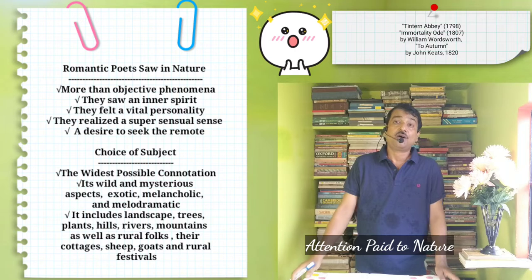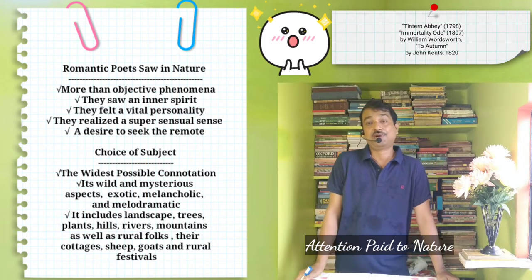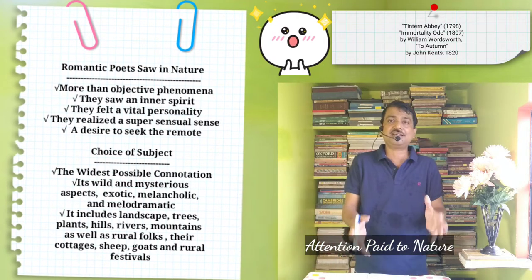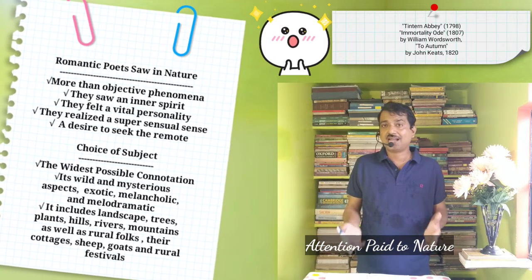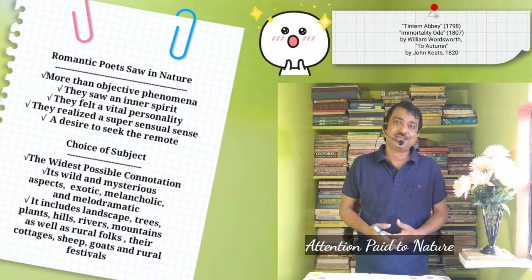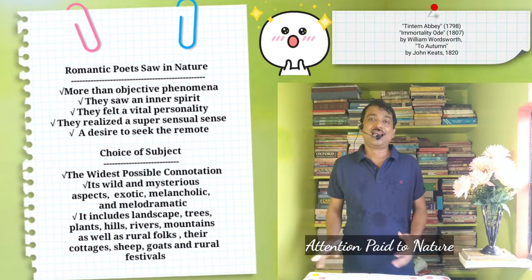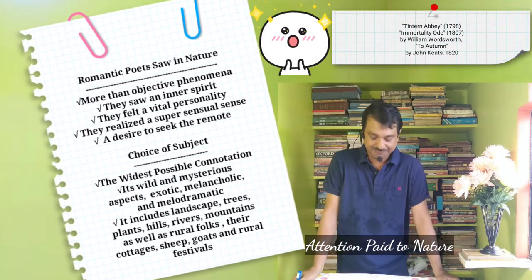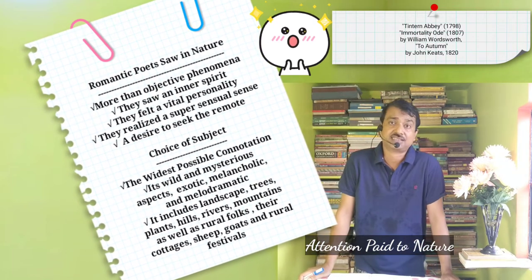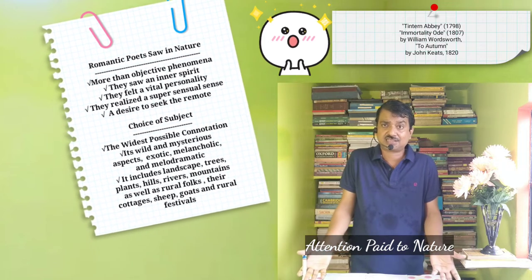Nature for the Romantic poets includes landscape, trees, plants, hills, rivers, and mountains, as well as rural folks together with their cottages, ships, goats, and rural festivals. Keats visualizes nature, Shelley intellectualizes it, Wordsworth mystifies it, and Byron revolutionizes it.